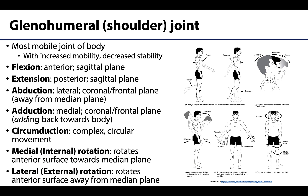We have finally made it to the glenohumeral or true shoulder joint. This joint has the distinction of being the most mobile joint of the body, capable of all motions possible at a synovial joint, but with that increased mobility comes an important trade-off: decreased stability. The shoulder joint is commonly discussed in clinical practice due to fairly common issues including dislocations, tendinitis, bursitis, and many others. There are links to videos in the learning objectives showing an individual performing these actions.